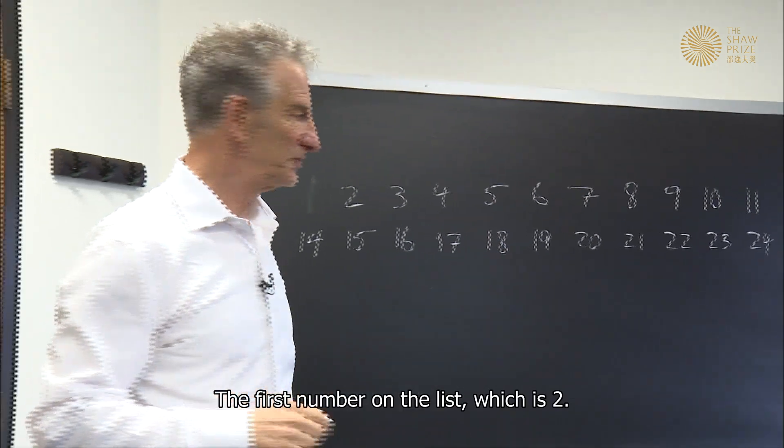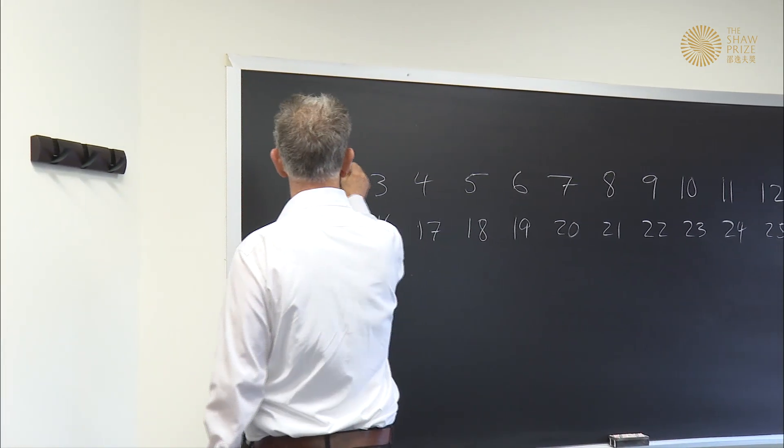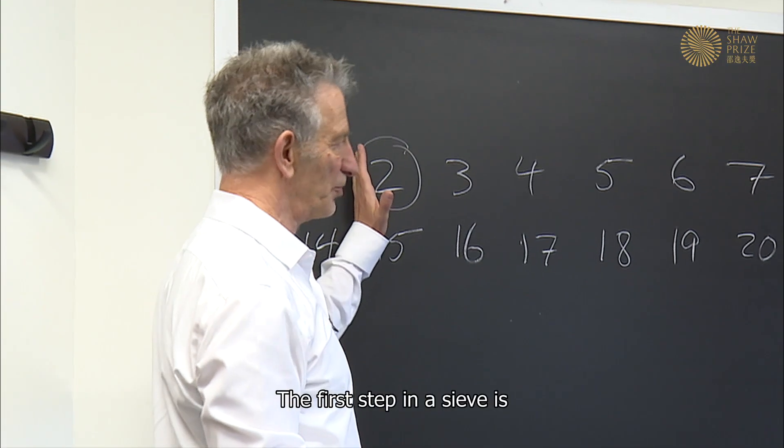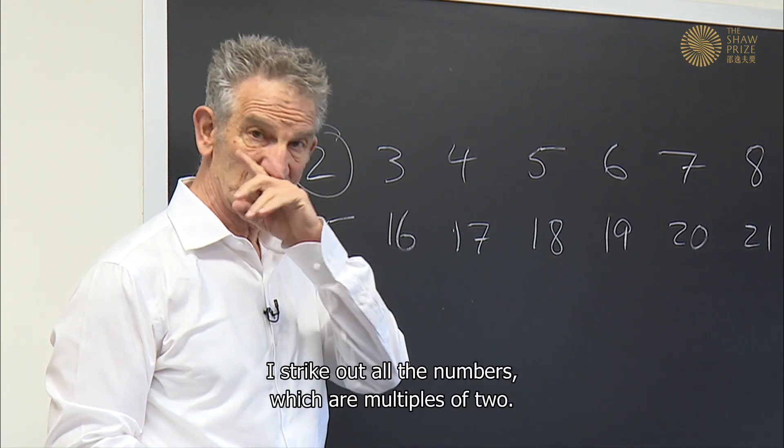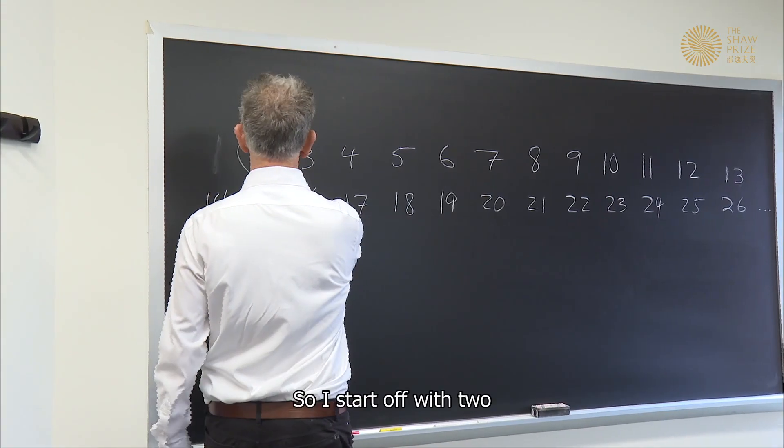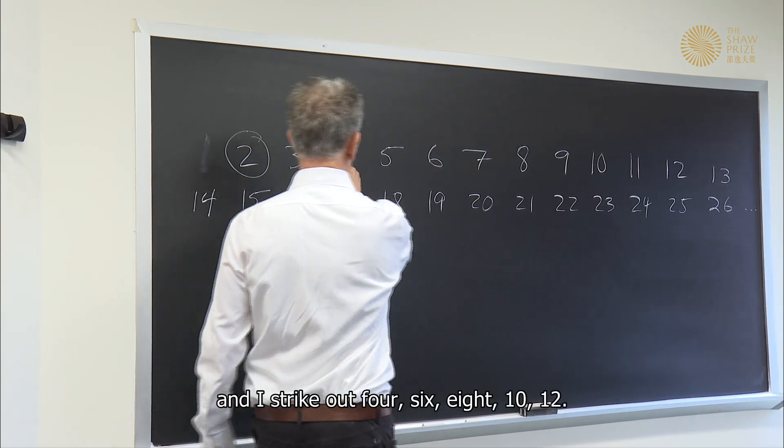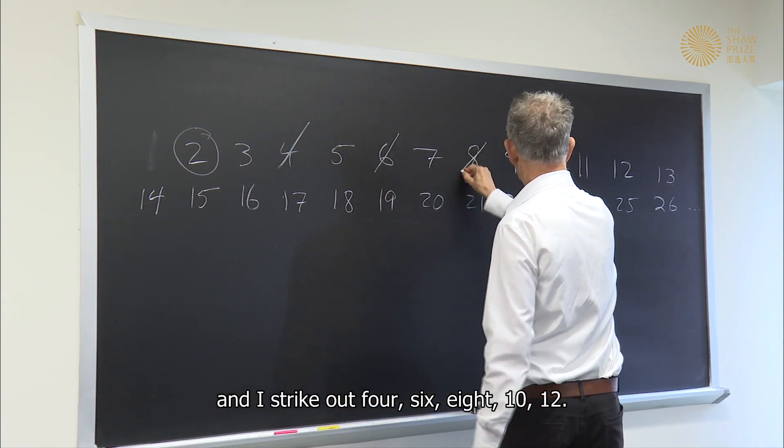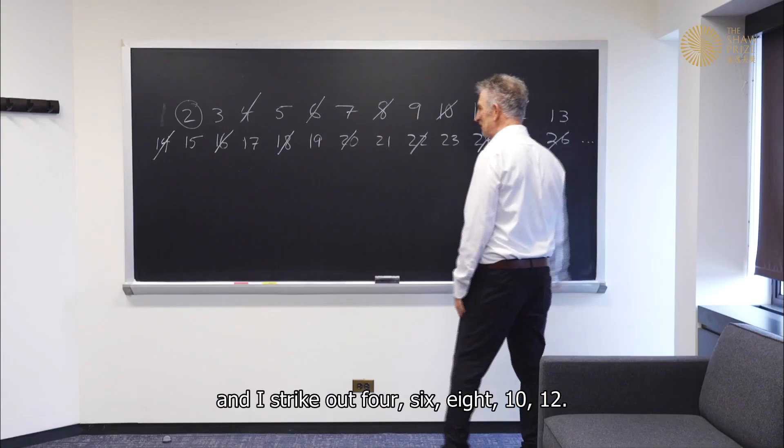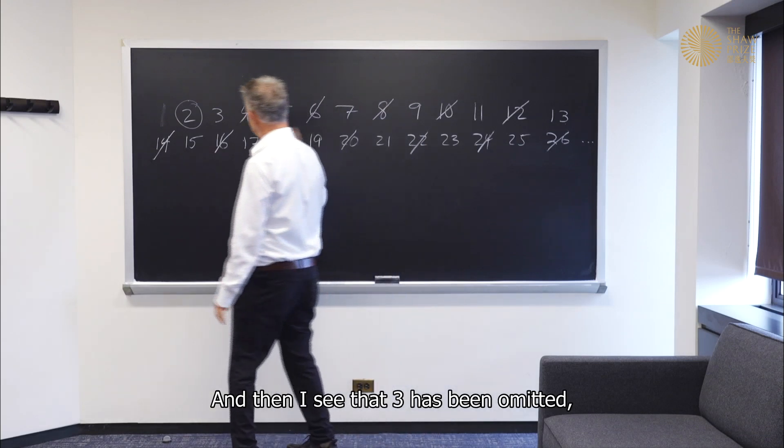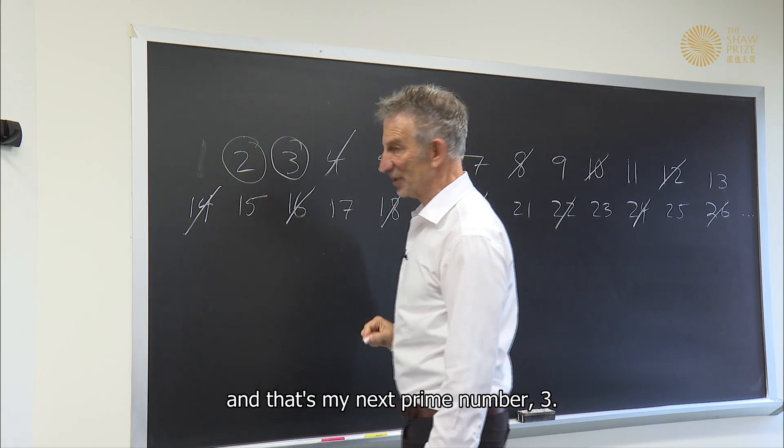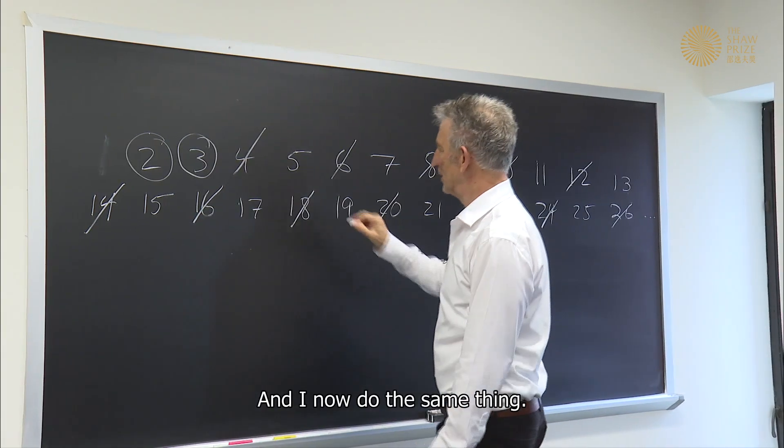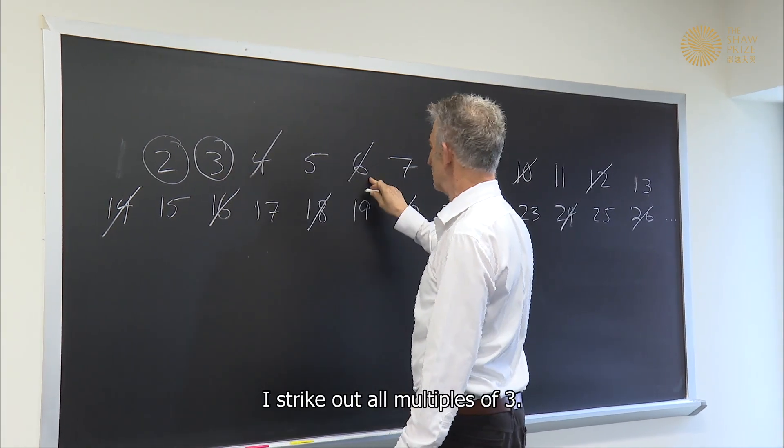The first number on the list, which is two. This is the first step in a sieve. I strike out all the numbers which are multiples of two. So I start off with two and I strike out four, six, eight, ten, twelve. And then I see that three has been omitted and that's my next prime, number three. And I now do the same thing. I strike out all multiples of three.